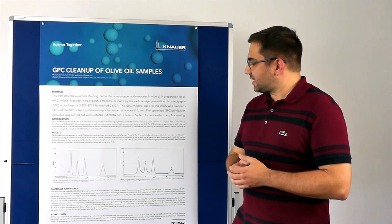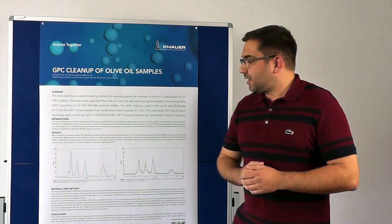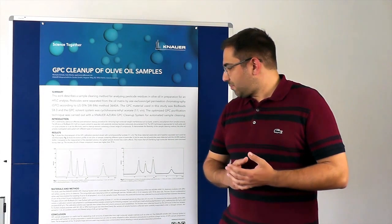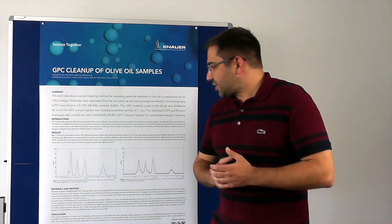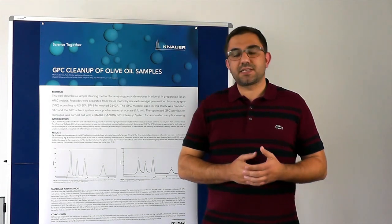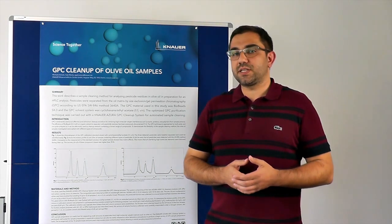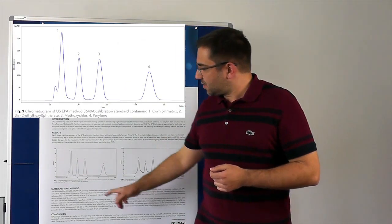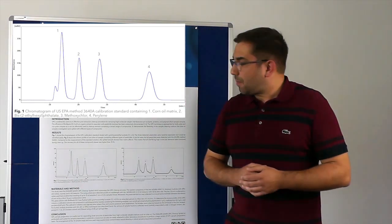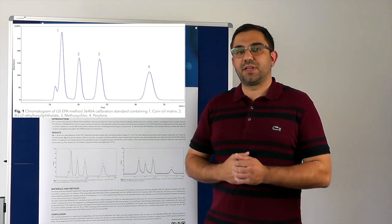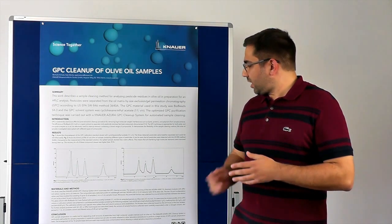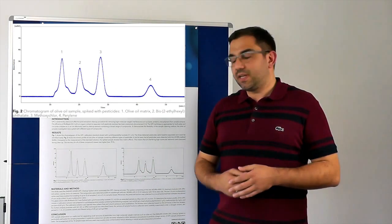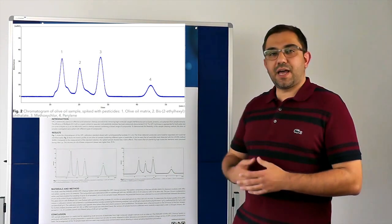As you can see from the chromatogram, we first run standards of the pesticides of interest — for example, methoxychlor or perylene substances which can be found in some oils. You can see three kinds of pesticides and the potential matrix from your sample. With the oil, you can clearly separate the oil matrix from your analytes of interest using size exclusion.